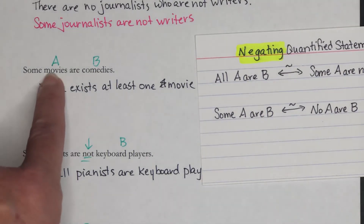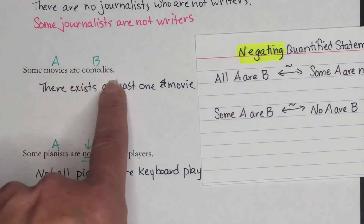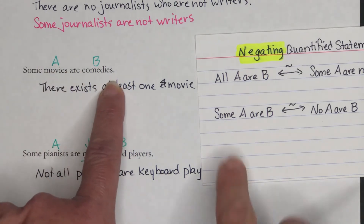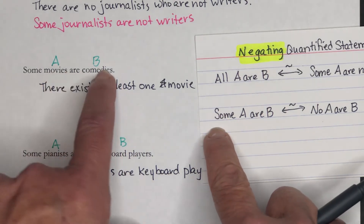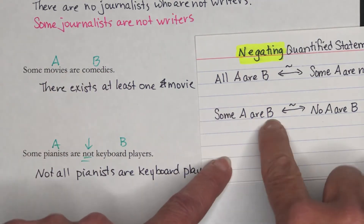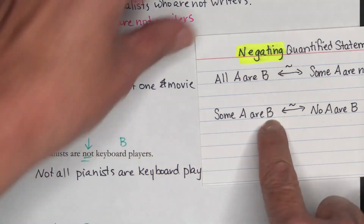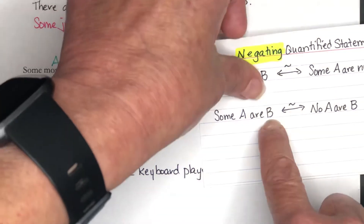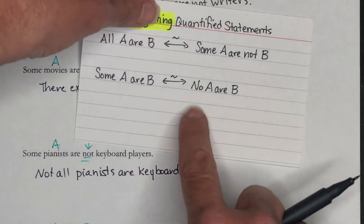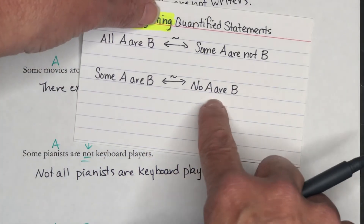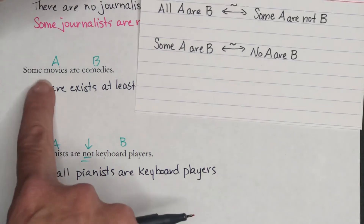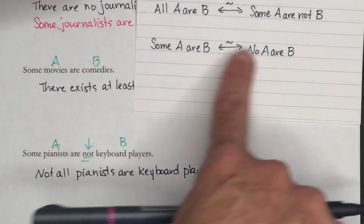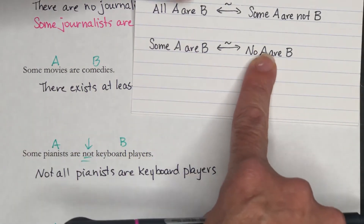For 'Some movies are comedies' — pattern: Some A are B — its negation is: No A are B. So: no movies are comedies.